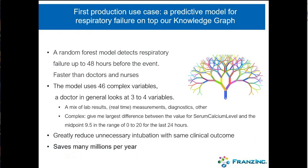Beginning in 2017 we went into production with a system that detects respiratory failure far better than doctors. It's a complex random forest model — we're also using deep learning models with 46 complex variables as input. A doctor generally doesn't have time to look at 46 variables, but a computer can easily do that. That's why we're actually better than a doctor at predicting when a patient is going to get into trouble. The system saves millions per year and saves lives.